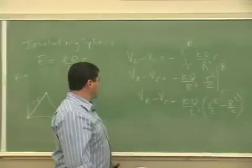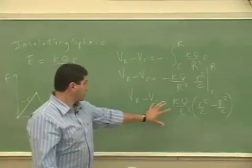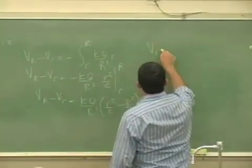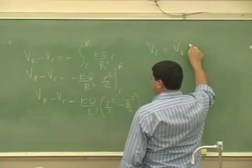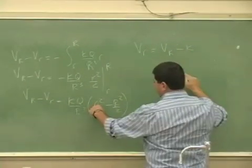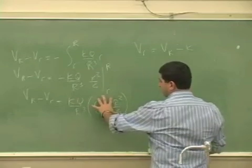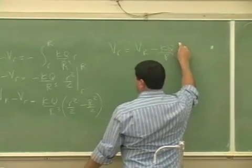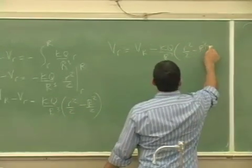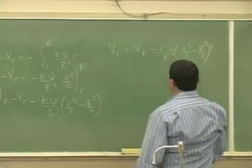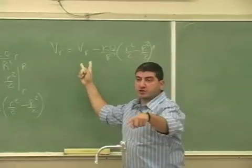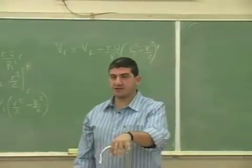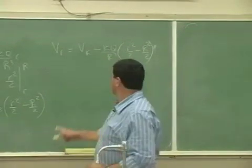My goal is to solve for V_r, so I bring everything to one side, take V_r to that side, and multiply this in. Taking this to the other side, it'll be negative kq over R³ times (r² over 2 minus R² over 2). Now, what is the potential at the surface? For a sphere, V at the surface is kq over R. Put that in and combine all the like terms.